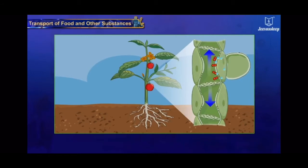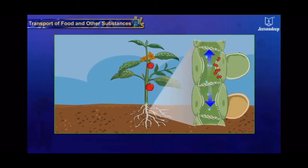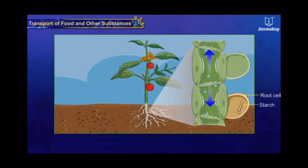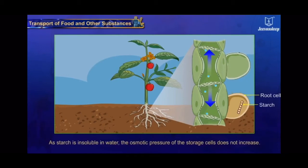Food starts moving from the region of high pressure to the region of low pressure. On reaching the storage tissues like root and fruit, sucrose is again actively transported into the cells and converted into starch. As starch is insoluble in water, the osmotic pressure of the storage cells does not increase.